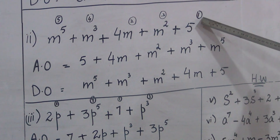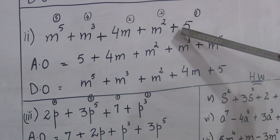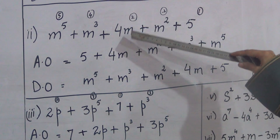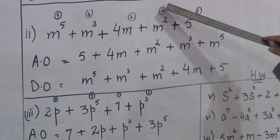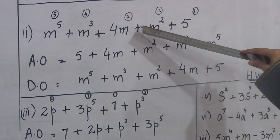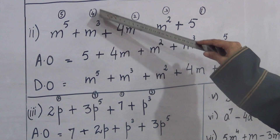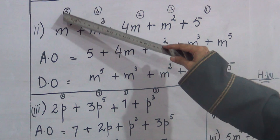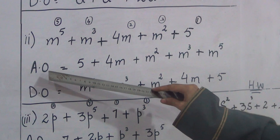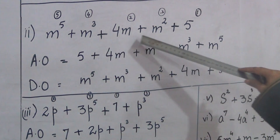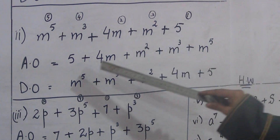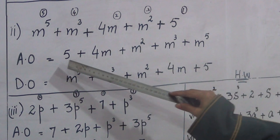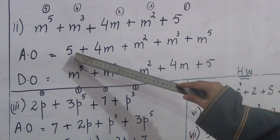So this expression with power zero is the first one. Then power one — this expression is the second term. Then power two — this expression is the third term. The first term in the ascending arrangement is plus five. If the sign is plus, we can skip writing it.